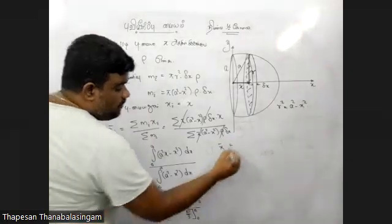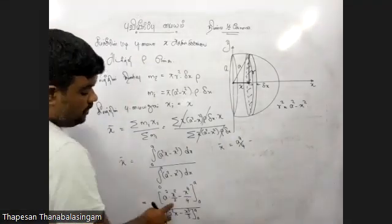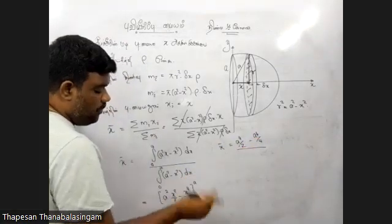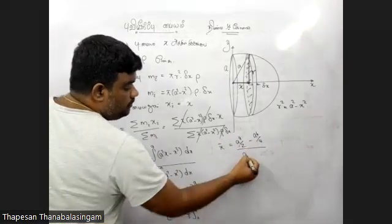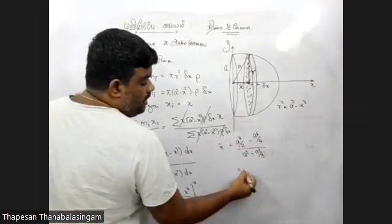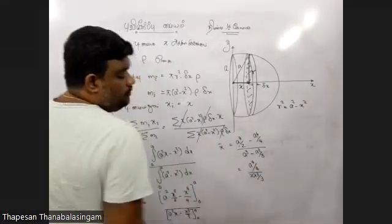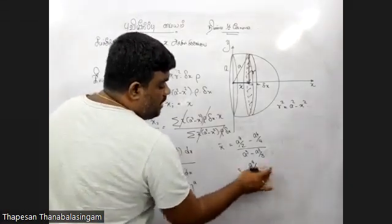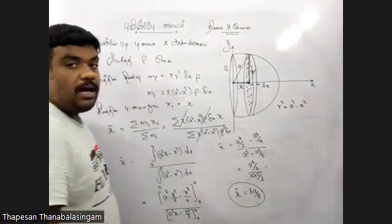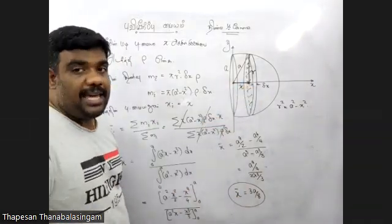A to the power 4 by minus A to the power 4, 4 by 2, so A to the power 4 by 4, 0 by 0. A to the power 4 by 4 over 2A to the power 4 by 3, so A to the power 4 by 3. A to the power 4 over 2A to the power 4.